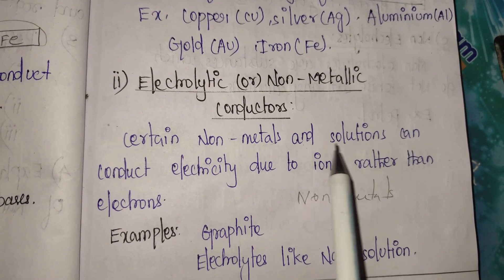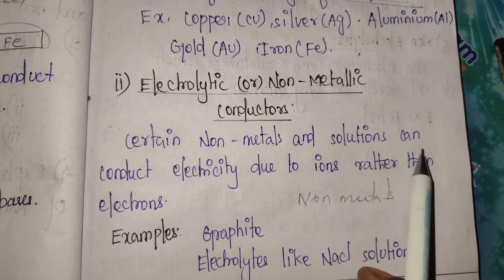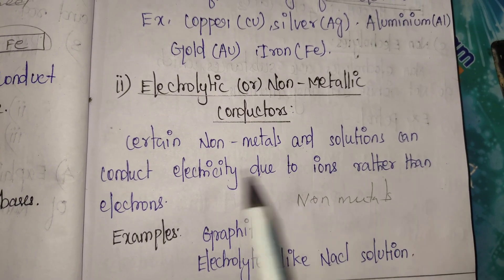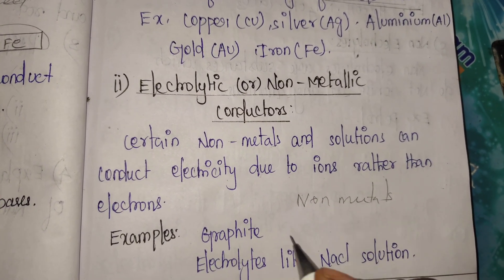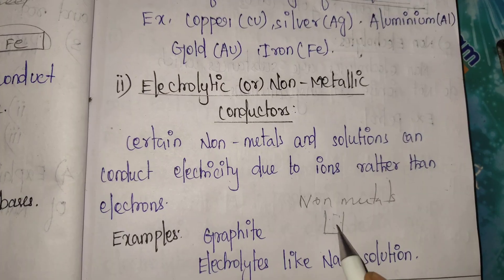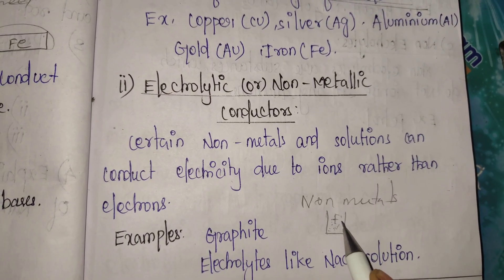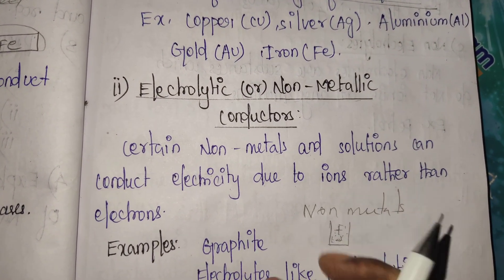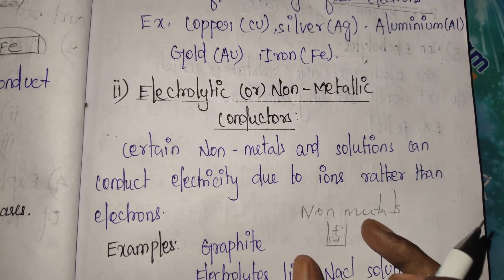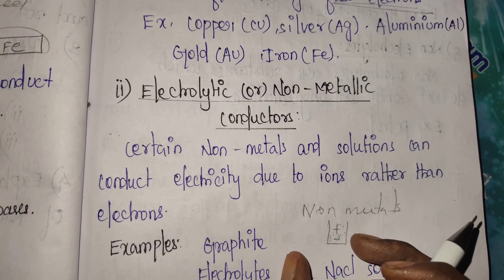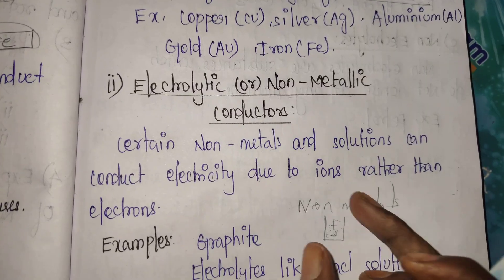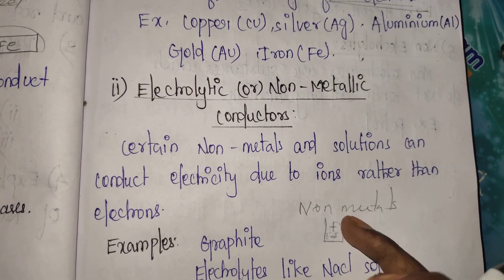Certain metals and solutions can conduct electricity due to ions rather than electrons. These are called electrolytic conductors. The ions — positive and negative charges — are present and the current is conducted through ions rather than electrons.